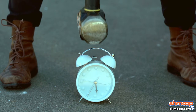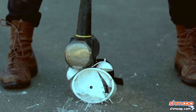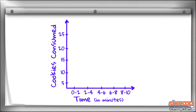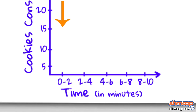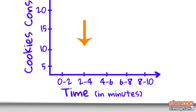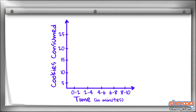Let's break the bars into chunks of time. The first bar will be cookies consumed from start to minute two. The second bar will be cookies consumed from minute two to minute four, and so on and so forth.